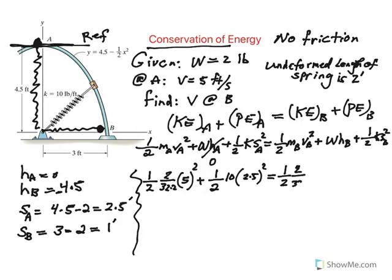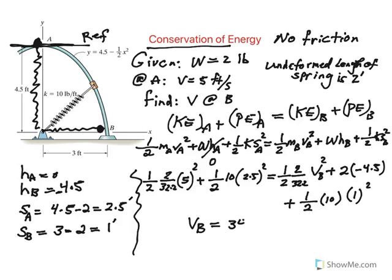Right-hand side. One half, again, mass, 2 divided by 32.2. Velocity of B is unknown. That's what we are trying to find. The weight is 2 pounds. H is minus 4.5. And then I'm running out of space, so I'll put the one half K. S sub B, which is 1 squared over here. So, just do the math and solve for velocity of B. Velocity of B happens to be about 34.1, if you round it, feet per second.